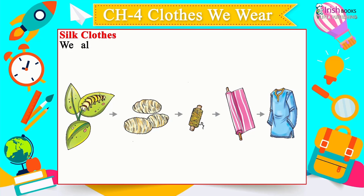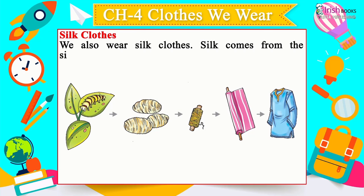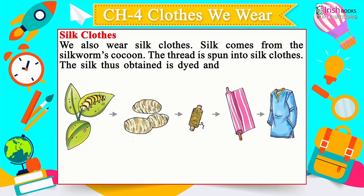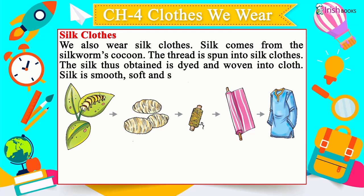Silk Clothes: We also wear silk clothes. Silk comes from the silkworm's cocoon — the thread is spun into silk clothes, then dyed and woven into cloth. Silk is smooth, soft, shiny and very expensive.